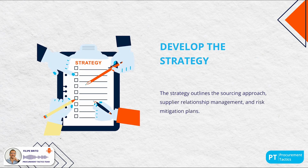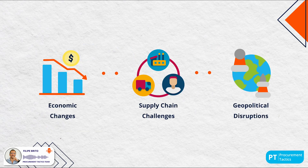Third, develop the strategy. Based on the analysis, a tailored strategy is developed for each category, outlining a sourcing approach, supply relationship management and risk mitigation plans. Because market conditions change all the time, having a category strategy in place better equips companies to face economic changes, supply chain challenges and geopolitical disruptions, making the company more agile and resilient.